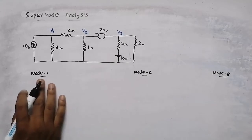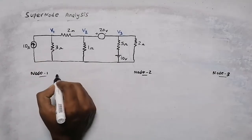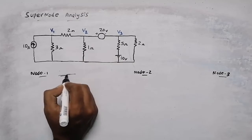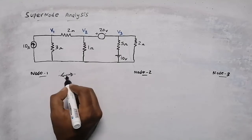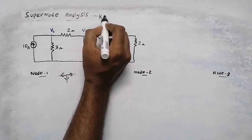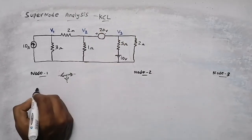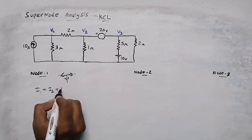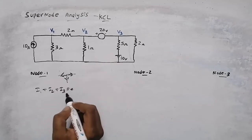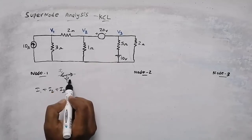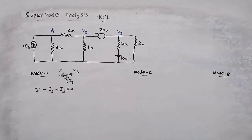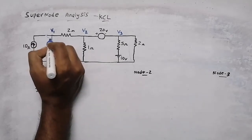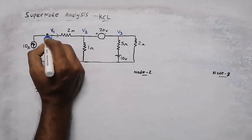First, we can write the nodal equation at Node 1. We will assume that all currents are flowing away from that junction node, and we will apply Kirchhoff's current law (KCL), where the sum of currents equals zero: I1 + I2 + I3 = 0. So at this node, I am assuming that all currents are flowing away from the node.